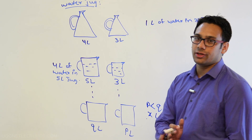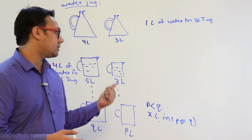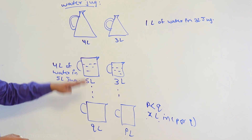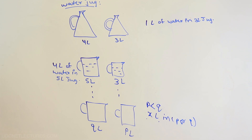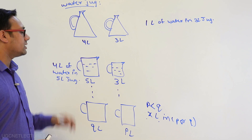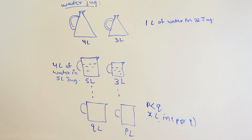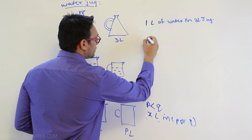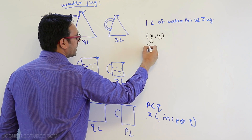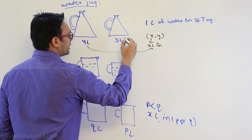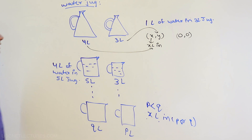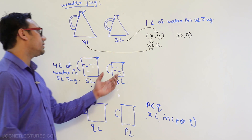Now you understand the problem — can you find some steps to go from the initial state to the final goal state? Let's work on the first problem: the first jug is four liters, the second jug is three liters. We represent the state as a pair (x, y), where x is the liters of water in the first jug and y is the liters in the second jug. Initially both jugs are empty, so the state is (0, 0), and we want to reach a final goal of one liter of water in the three liter jug.